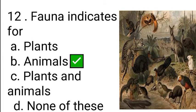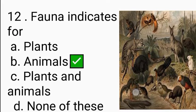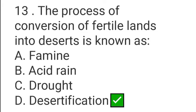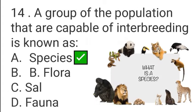Fauna refers to animals. The process of conversion of fertile lands into desert is known as desertification. Deforestation is also a related concept. A group of populations that are capable of interbreeding is known as a species.